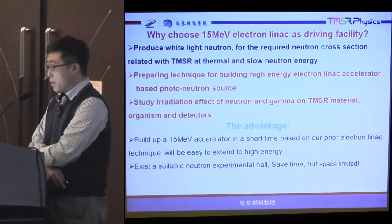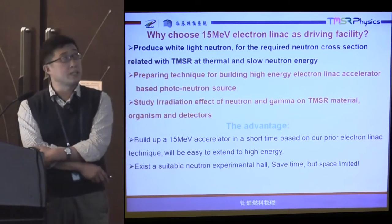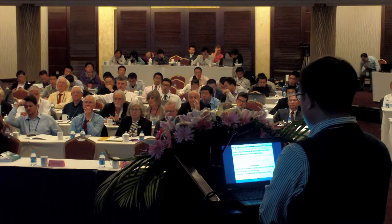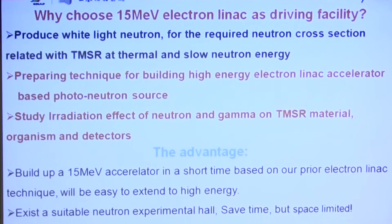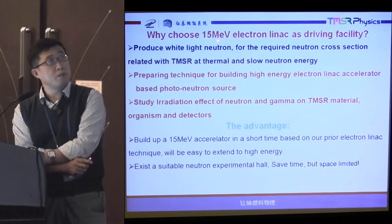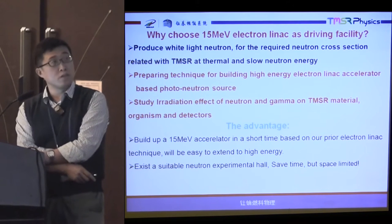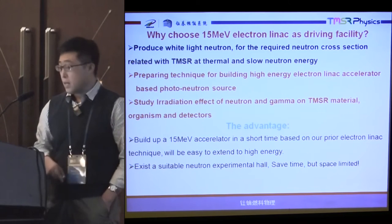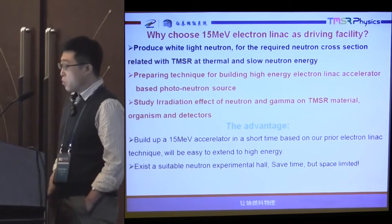We choose a 15 MeV electron linac driving facility to produce white-light neutrons for the required neutron cross-sections related with TMSR at thermal and slow neutron energy, preparing technique for building a high-energy electron linac accelerator, and studying the irradiation effect of neutrons and gamma on TMSR materials and detectors. The advantage of our 15 MeV electron linac accelerator-driven photoneutron source: build up a 15 MeV accelerator in a short time based on our prior electron linac technique, which will be easy to extend to high energy. We have a suitable neutron experiment hall, so we save time, but space is limited.